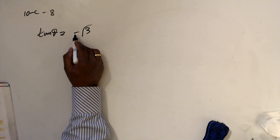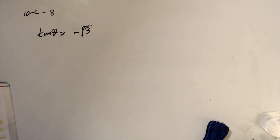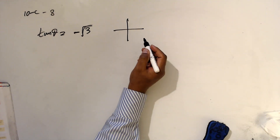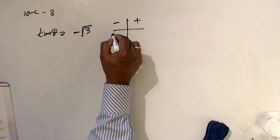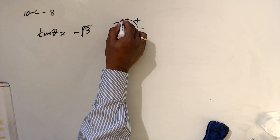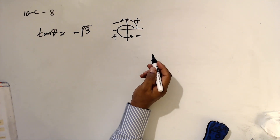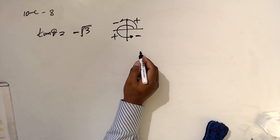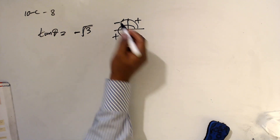Number eight: tan θ = -√3. Which quadrant has tan negative? Tan is negative in the second and fourth quadrants. The problem says theta is reflex, so it is in the fourth quadrant — not obtuse.